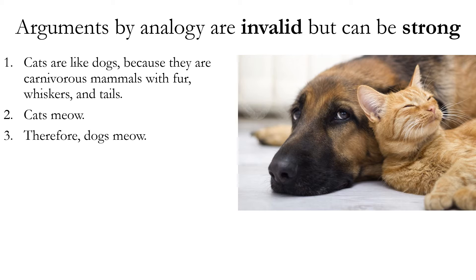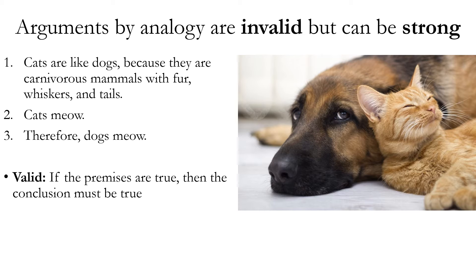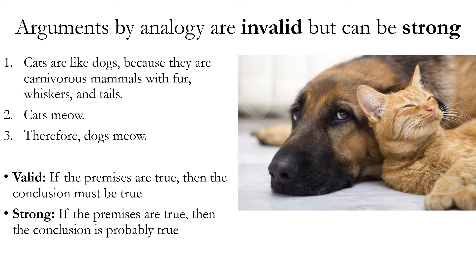Because all arguments by analogy share the same logical form, they are all invalid. Invalid just means not logically valid. Valid means if the premises are true, the conclusion must be true. Even though arguments by analogy are all invalid, they can still be strong. Logically strong means that if the premises are true, then the conclusion is probably true. The premises don't guarantee the truth of a conclusion in a strong argument, but they do make it more probable — and that's why arguments by analogy can be effective.